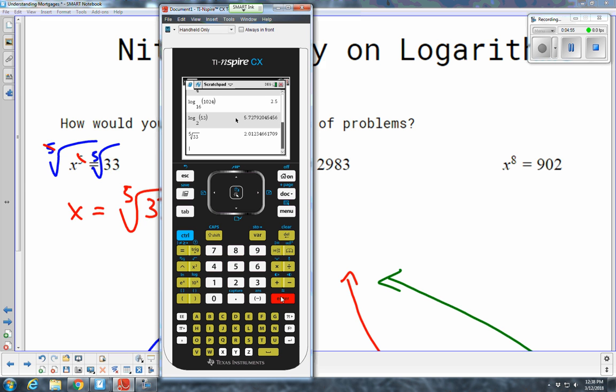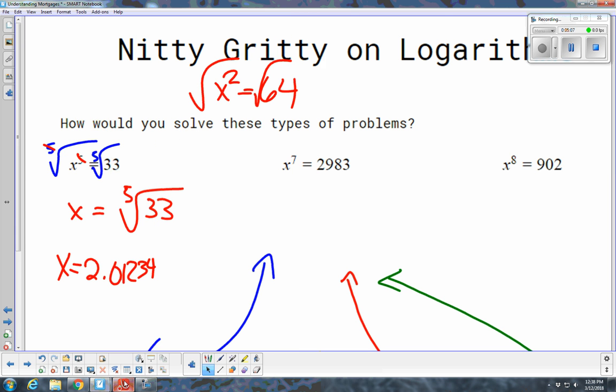So, fifth root of 33, I get 2.01234. So, what does that mean? That means x is 2.01234. You can keep going if you want to. That's far enough. So, that's how you do a fifth root on that example.